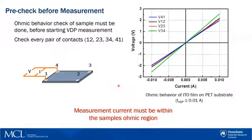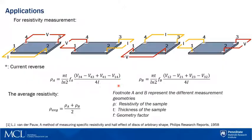It is very important that the measurement current must be within the sample's ohmic region. For the resistivity measurement as shown in the schematic, the user needs to apply current along each rim of the sample, and measure the voltage across the rim facing it.